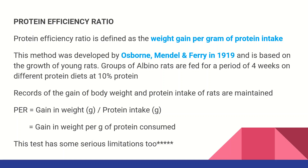One group is protein and one group is non-protein. The body weight gain is measured. PER equals gain in weight divided by protein intake — that is, gain in weight per gram of protein consumed. However, this method has some serious limitations.